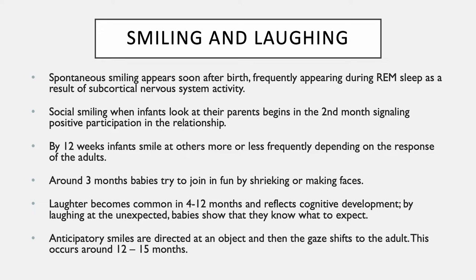Anticipatory smiles are directed at an object and then the gaze shifts to the adult; this occurs about 12 to 15 months. By six months, they giggle in response to unusual sounds and actions such as putting a towel over their face. By 10 months, they may laugh as they try to put the towel back on their face.